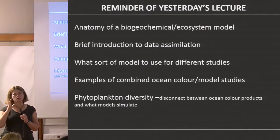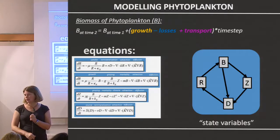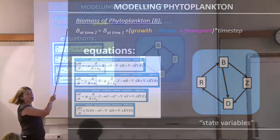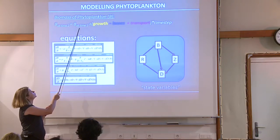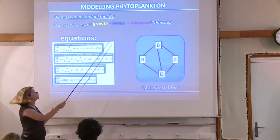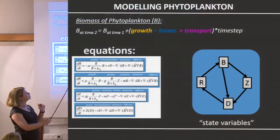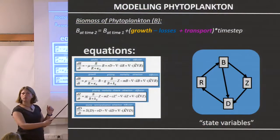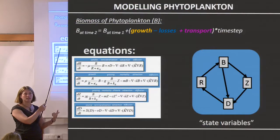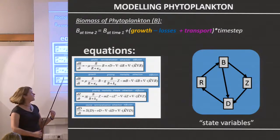We're going to continue some of those thoughts today. The models are constructed in time-stepping: biomass equals the biomass at a previous time, plus growth, minus loss, plus transport, multiplied by the time interval. We write equations for biomass and for all the other important pieces — the resources — so that might be phosphate, nitrate, nitrite, ammonia, iron.